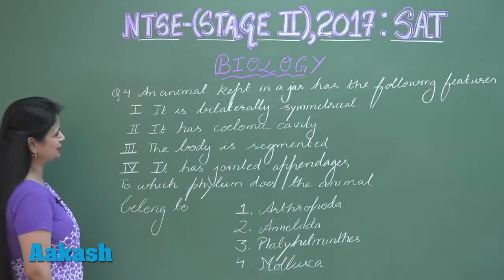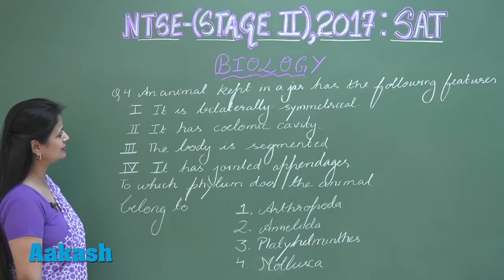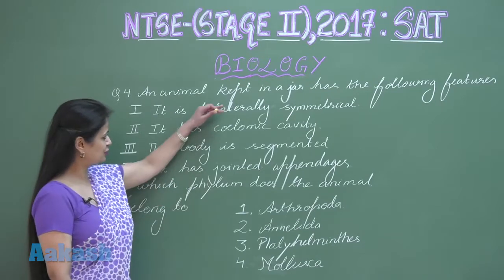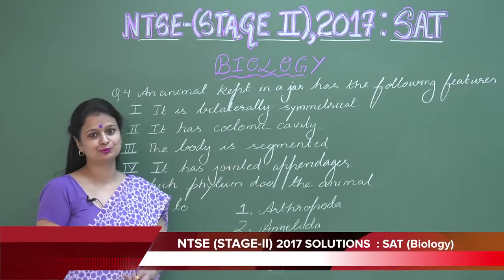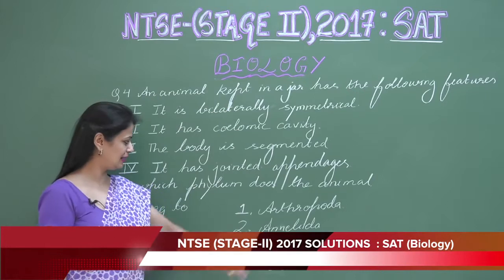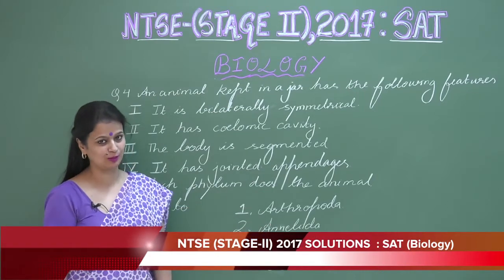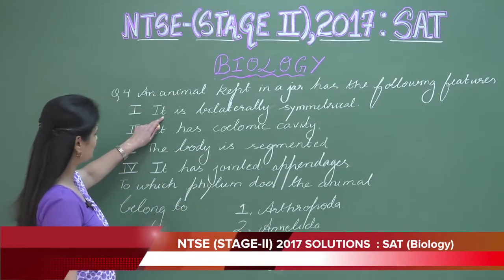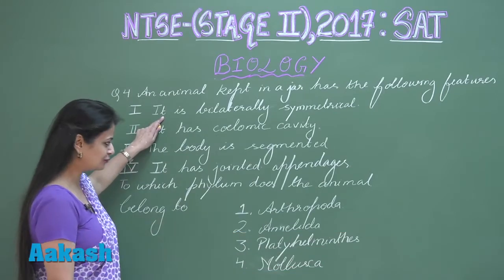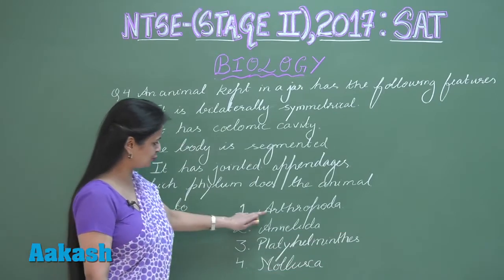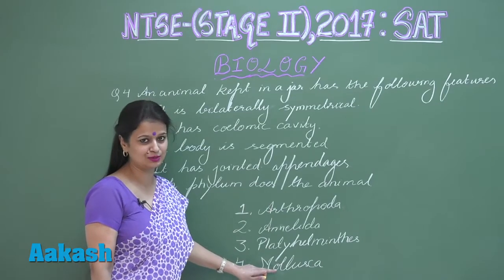Let's start with question number four. An animal is kept in a jar and it shows certain features — we have to see which phylum this animal belongs to. The first feature is bilateral symmetry, which is shown by all these groups.